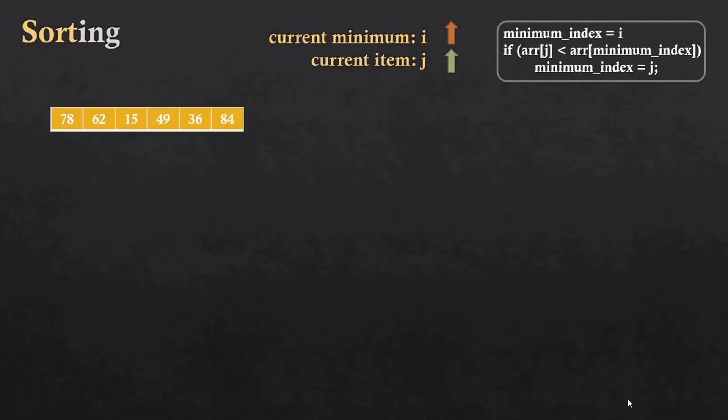Let's say we have an array of size 6 that contains some values and we have to sort it. We will set the current minimum with a red arrow and the current item with green for better understanding. At the beginning we set the current minimum and the current item at the first index. Now the current item will move forward. If we find a value less than the current minimum, we will update the current minimum value.